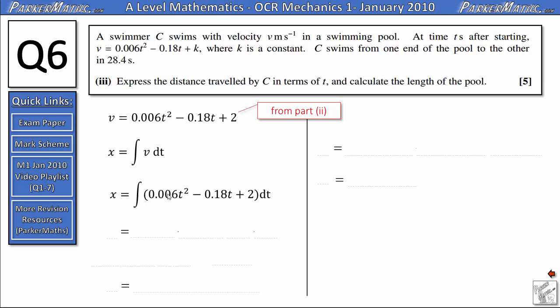And to do that we're going to increase the power and then divide by the new power. So increasing the power makes it 3, and if we divide 0.006 by 3 we end up with 0.002 and then we multiply that by t cubed. Here, think of this as t to the power 1, increase it, becomes t squared, divide minus 0.18 by 2, you get minus 0.09t squared. Don't forget you can use your calculator for these bits if you're not too confident with your mental arithmetic. Integrating 2 gives us 2t and don't forget your plus c on the end.